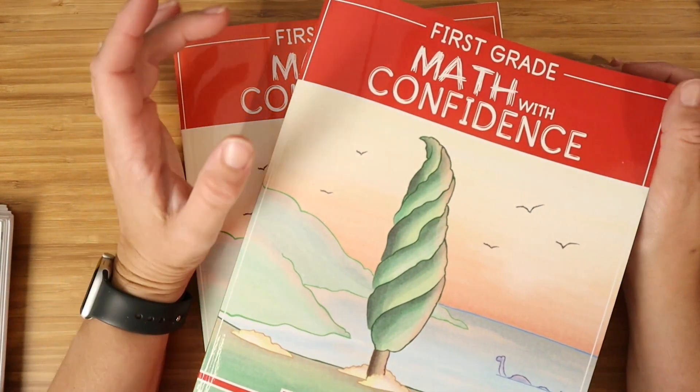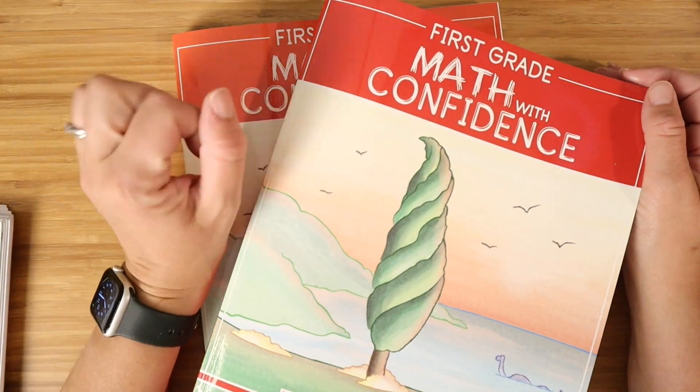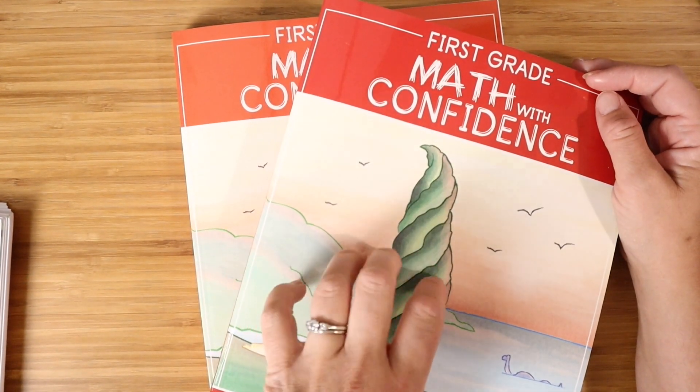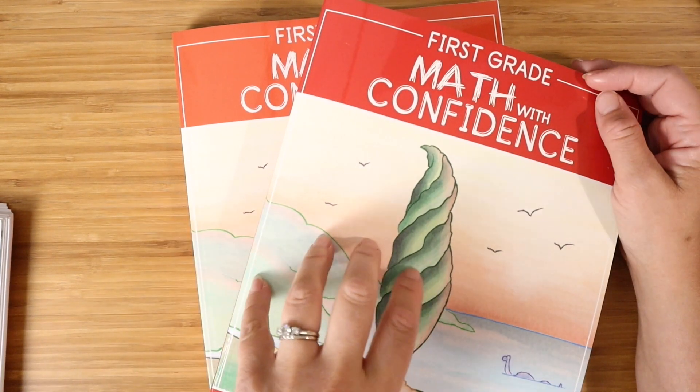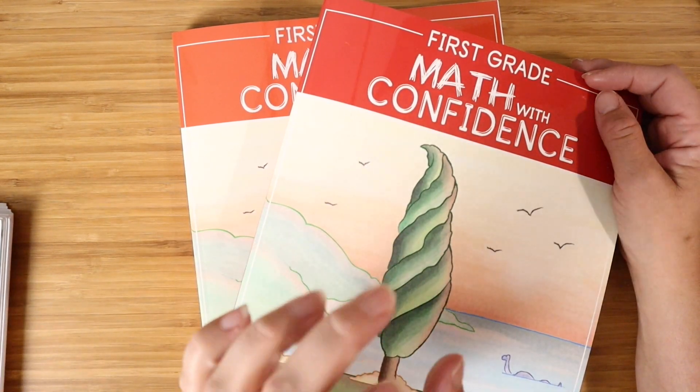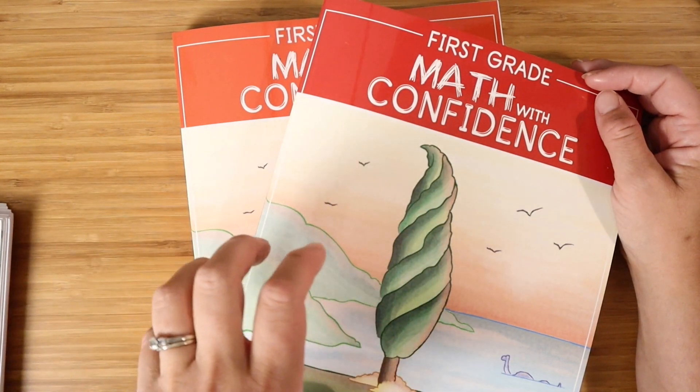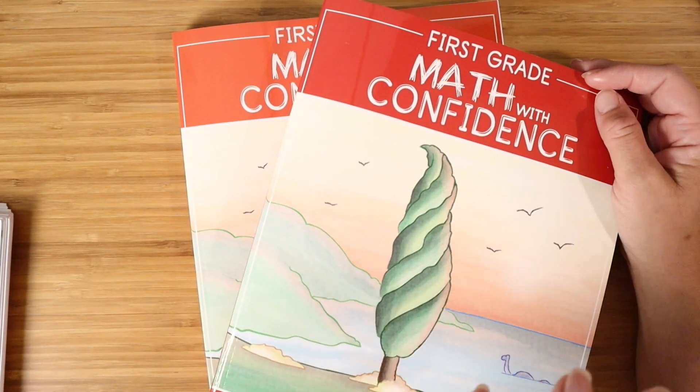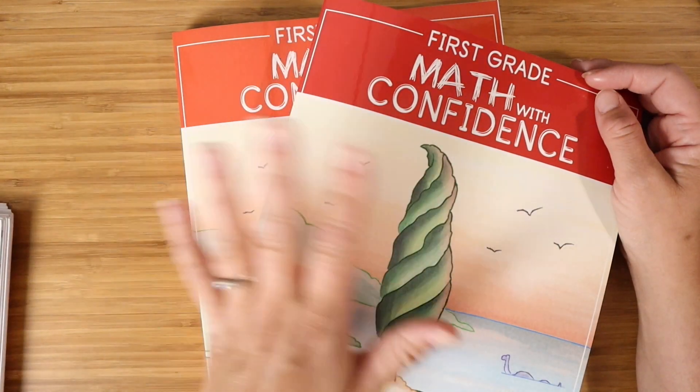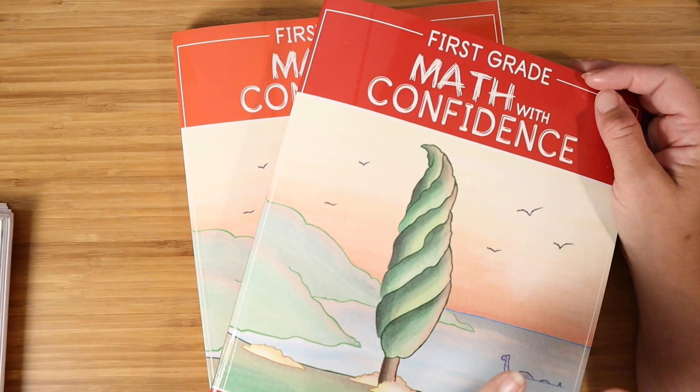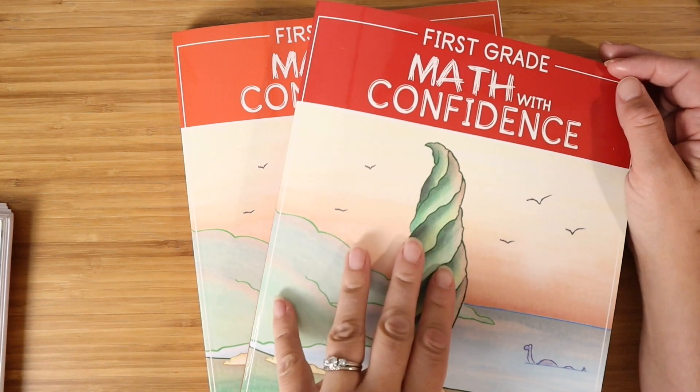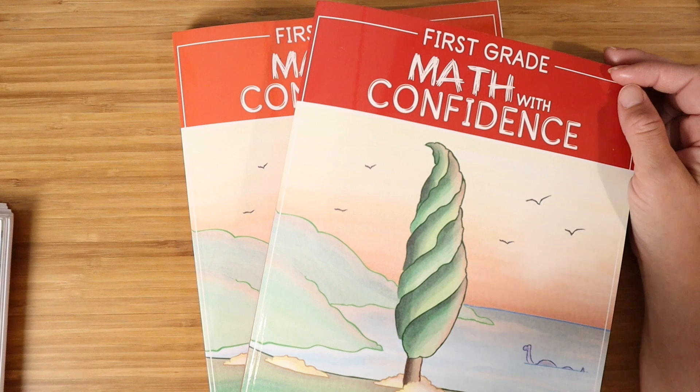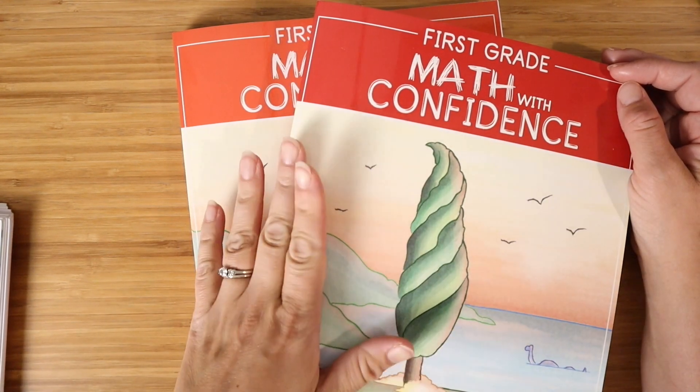So that my friends is Kate Snow's Math with Confidence first grade. If you found this flip through helpful, please go ahead and hit that like button and subscribe if you have not already. If you're interested in seeing other grade levels of Math with Confidence, I do have a flip through of Math with Confidence kindergarten, second grade, and third grade. I also have comparisons of Math with Confidence with Singapore math. You can find me here in the comment section and over on Instagram at homespun.childhood and on the web homespunchildhood.com. Thanks, y'all.